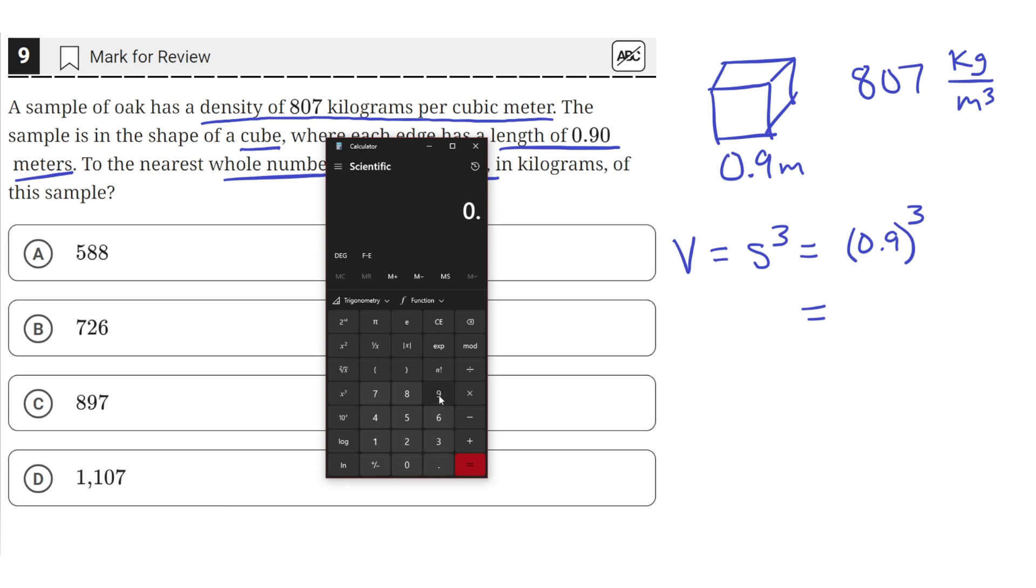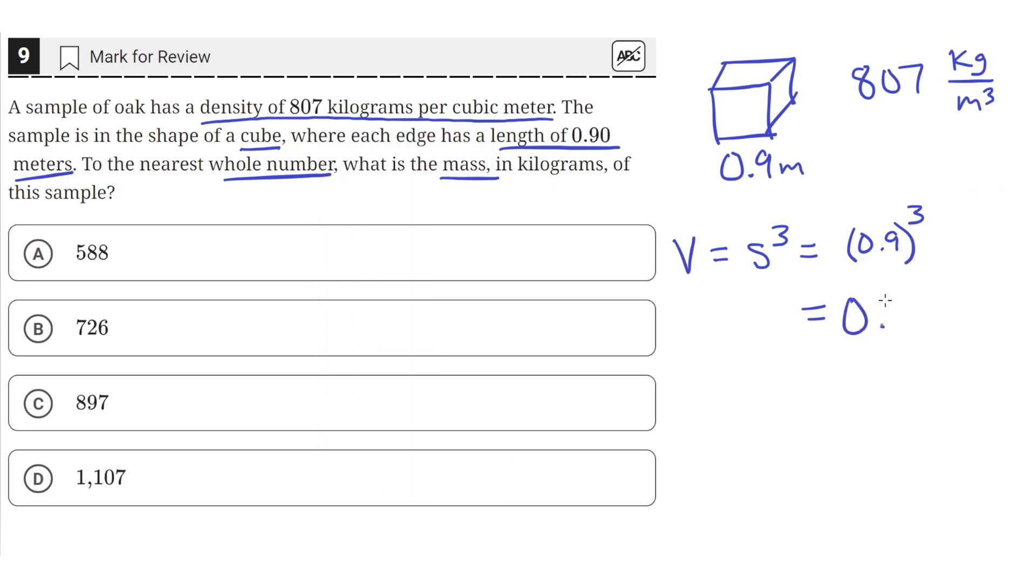So 0.9 times 0.9 times 0.9, which is 0.729. This is how many meters cubed are inside this cube.